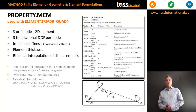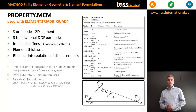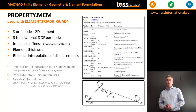For 2D elements, we have the membrane elements, property.mem. You can use these with element type triad3 or quad4 — three- or four-node 2D elements. These elements have 3 translational degrees of freedom per node and can handle in-plane stiffness but no bending stiffness. The element thickness is defined under the property, and displacements inside the element are interpolated linearly from the nodal displacements.